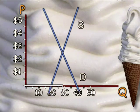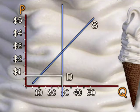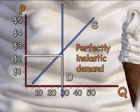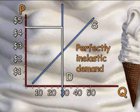Similarly, if demand were unresponsive to price — or totally price inelastic — the demand schedule too would be a vertical line, with a price elasticity of zero: the same quantity of ice cream demanded no matter what the price.